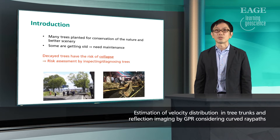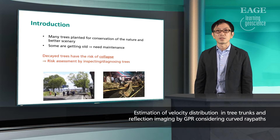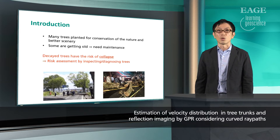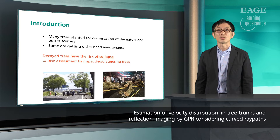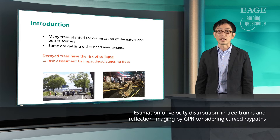Let me start with the introduction. There are many trees in the city. Some of these trees are getting old and need maintenance. Because decayed trees have the risk of collapse which may cause injury and traffic problems as you can see in the photos. In order to mitigate the problem, we try to provide risk assessment by inspecting and diagnosing trees.